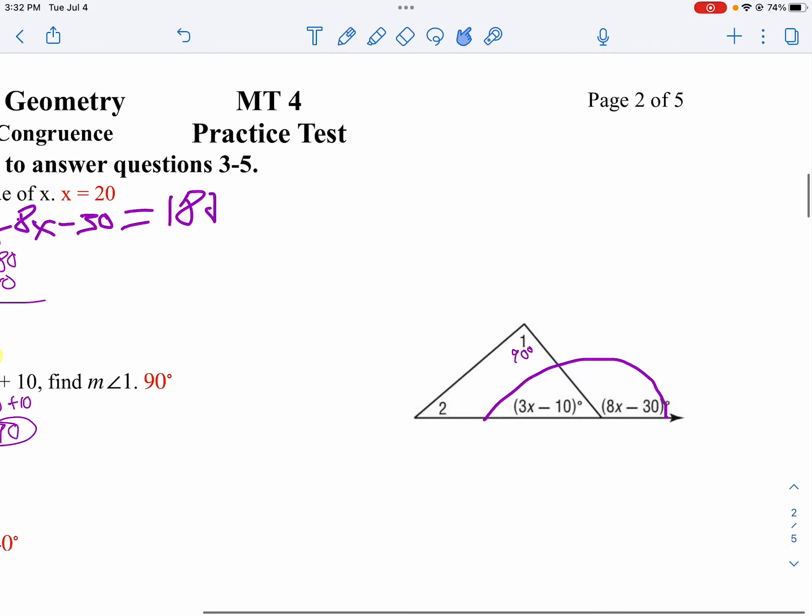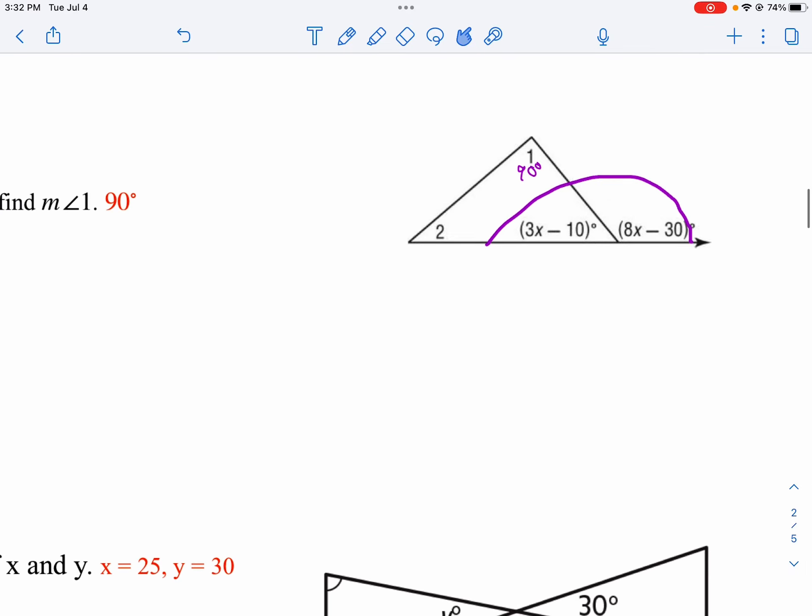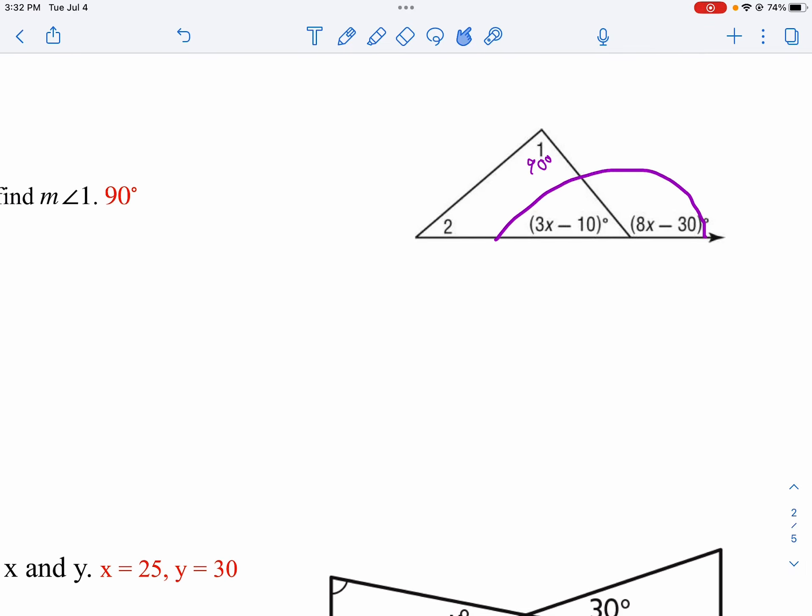And then I want to find angle 2. Now a couple different ways we can go about to find angle 2. Let's use the fact that x is 20 and let's find the measure of this angle right here. So 3 times 20 is 60. 60 minus 10 is 50. And so we know the exterior angle is 130 because 130 plus 50 is 180, or 8 times 20 is 160 minus 30 is 130.